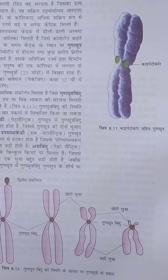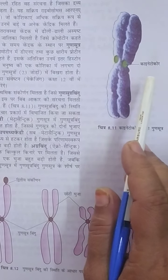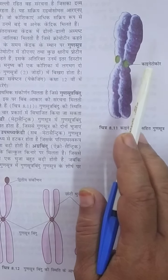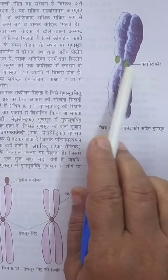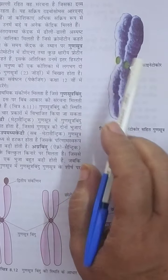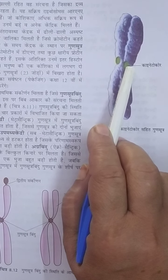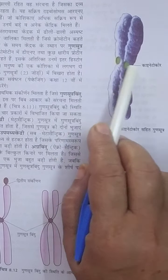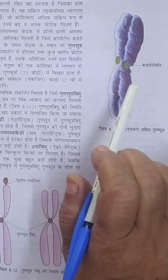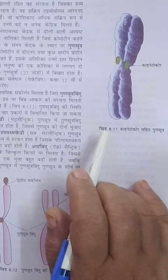The centromere is the constricted area of the chromosome, known as the primary constriction. It is also known as the kinetochore. Based on the number of kinetochores, chromosomes are classified into different types.